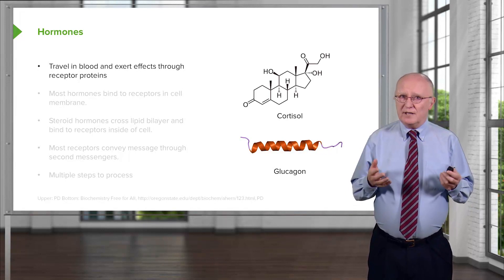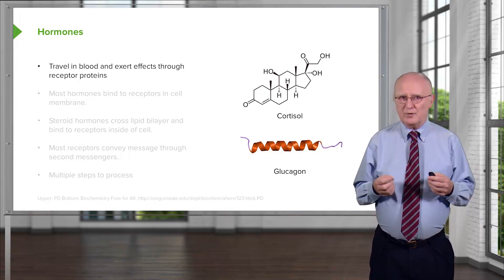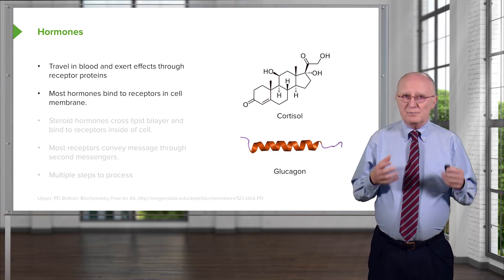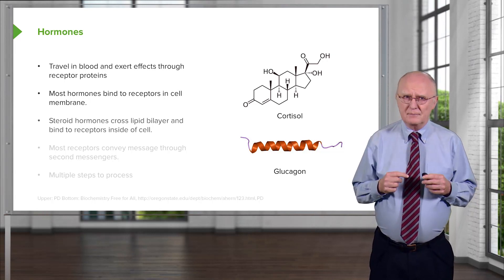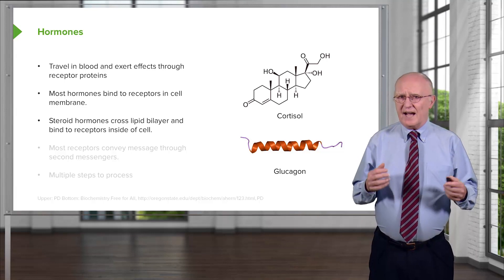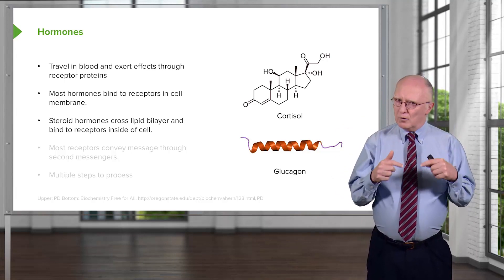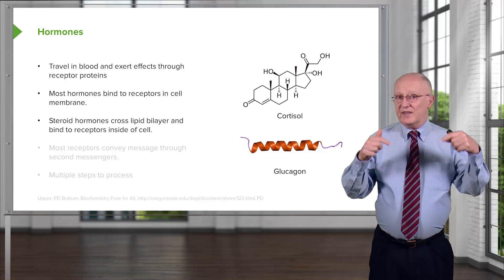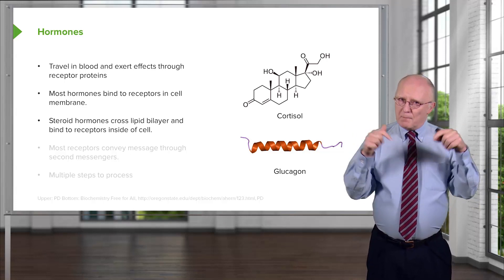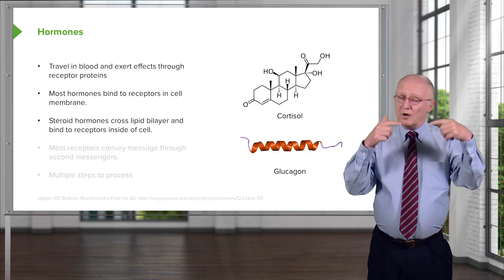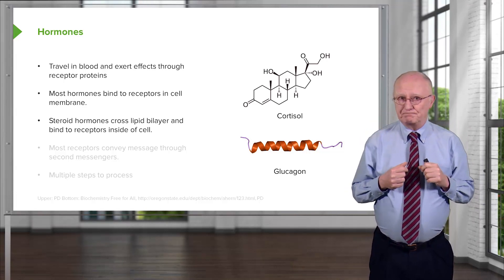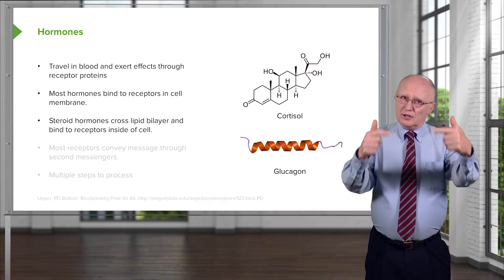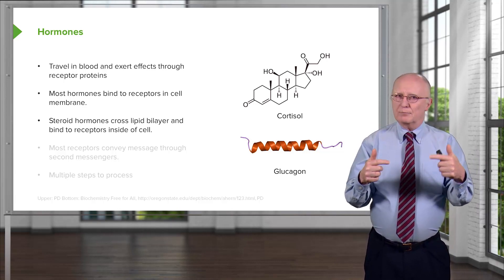Hormones travel in blood and exert their effects through receptor proteins embedded in the lipid bilayer of individual cells. Most hormones bind to receptors in the cell membrane, but not all. Some hormones, like the steroid hormones, can actually cross the lipid bilayer on their own and bind to receptors on the inside of the cell. Steroid hormone receptors are mostly inside the cell, whereas most other hormone receptors are on the membrane. A few steroid hormone receptors have recently been discovered in the cell membrane as well, but most are located inside.